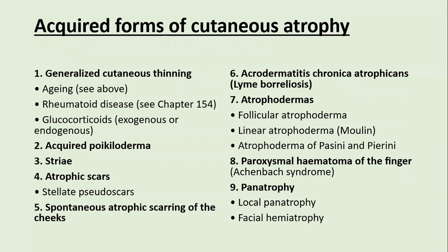Different acquired forms of cutaneous atrophy include: generalized cutaneous thinning from aging, rheumatoid or connective tissue disorders, glucocorticoids (both exogenous and endogenous, such as Cushing syndrome), acquired poikilodermas, striae, atrophic scars, spontaneous atrophic scarring of the cheeks, acrodermatitis chronica atrophicans (a manifestation of Lyme disease), various atrophodermas (follicular, linear, and atrophoderma of Pasini and Pierini), paroxysmal hematoma of the finger, and pan atrophies (local and facial).